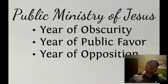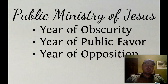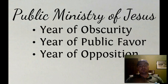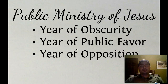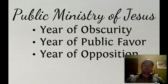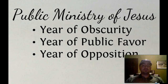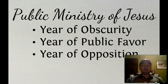The public ministry of Jesus is divided into three categories by Metzger: the year of obscurity, the year of public favor, and the year of opposition. These three should be extremely easy to remember because they are very self-descriptive — Jesus was obscure, then he had public favor, and then he was opposed.